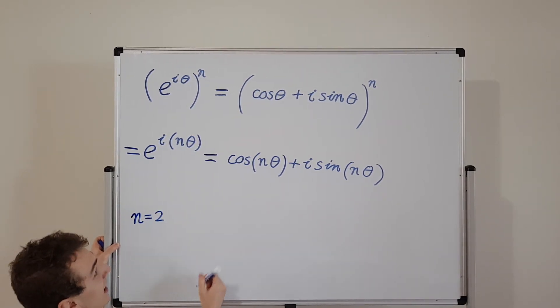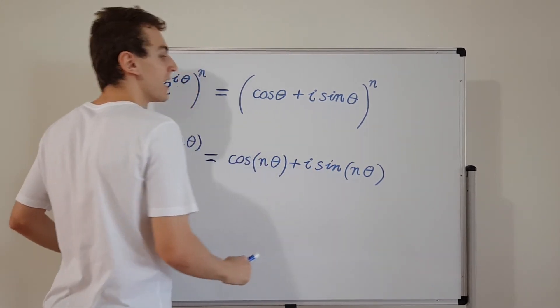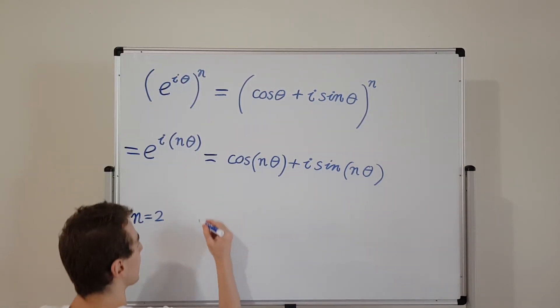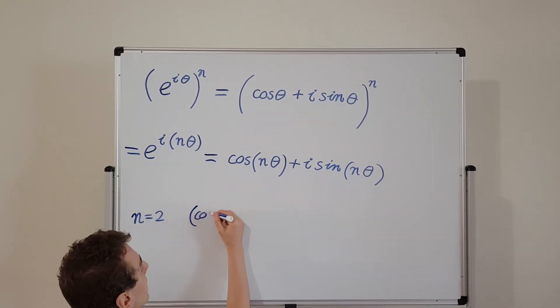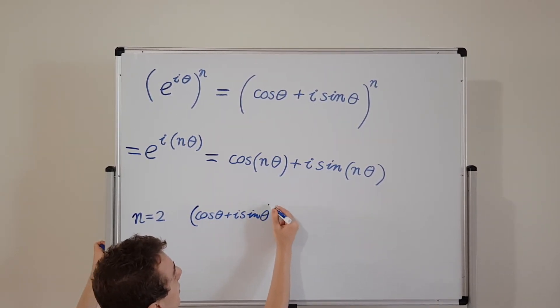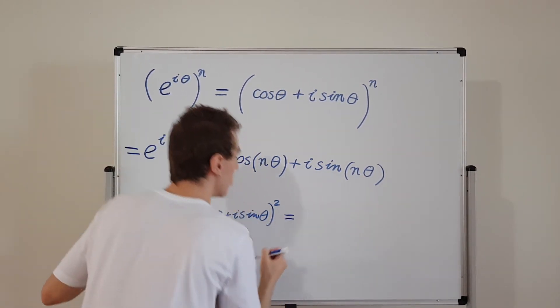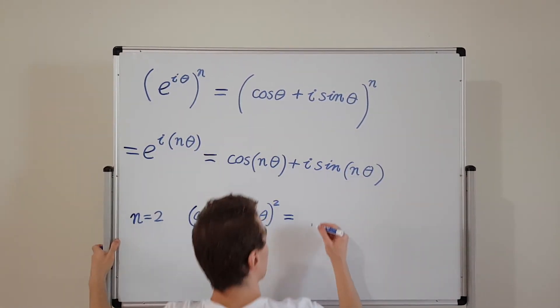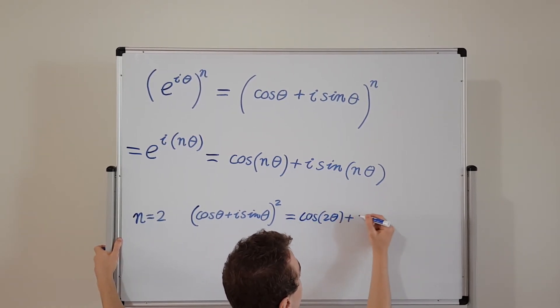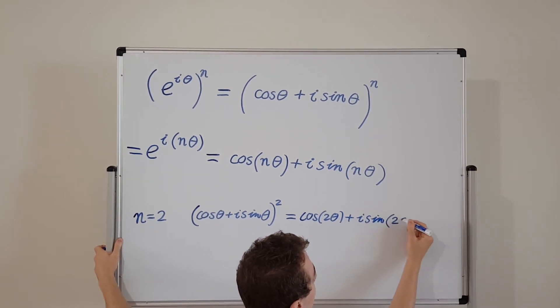We have that squaring this is equivalent to putting a 2 over here. And when we square this expression over here, that's going to be equivalent to cosine of theta plus i sine of theta squared. And that's equal to just putting a 2 in front of the thetas. So we're going to have cosine of 2 theta plus i sine of 2 theta.